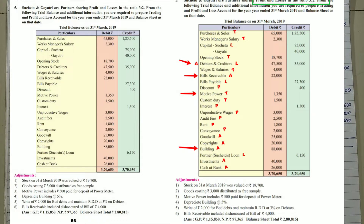Hello students, welcome to our class. Again we are solving question number 5, page number 56, chapter is Partnership Final Accounts. There is a question with you — if you don't have it, take a screenshot of the question. We have tick-marked the trading, asset, liability adjustments. We are solving only limited adjustments here — repeated adjustments we have already done.